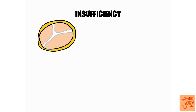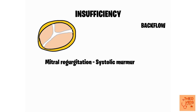In insufficiency, the valves are not competent enough to hold back blood during systole, or when they are supposed to. The valves cannot provide unidirectional flow, causing backflow. In mitral regurgitation, the mitral valves are not strong enough to hold blood back inside the ventricles during ventricular systole. During ventricular contraction, while blood flows through the aorta, some blood also flows back into the left atrium, producing a systolic murmur.